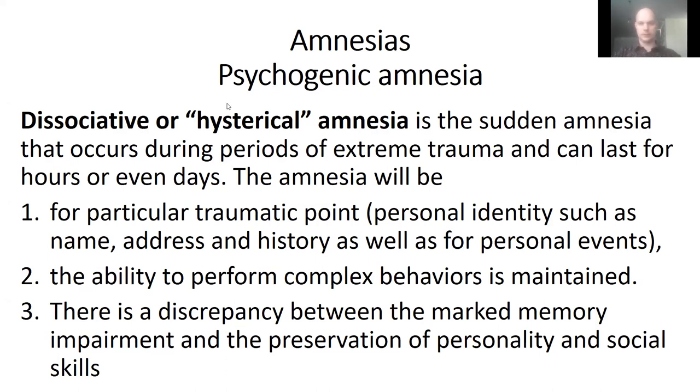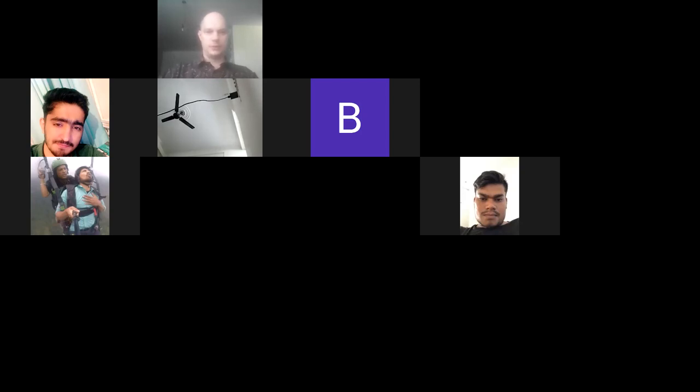Dissociation — like in chemistry where sodium and chlorine dissociate and split into two parts, each existing independently — works the same with memory. People use a dissociation mechanism to protect themselves: they try to isolate something really painful from their memory, their conscience, from their mind. They keep it out of their conscious 'screen.' For example, think of your conscience as a screen — if I don't want to see some objects on the screen, I remove them and forget about them. This is dissociative amnesia.